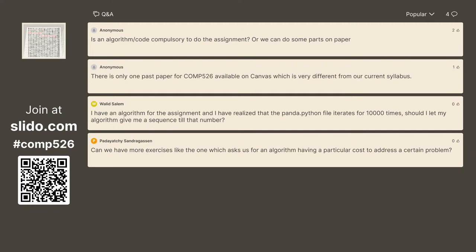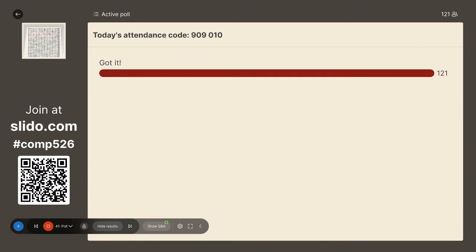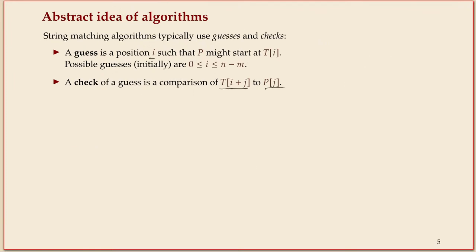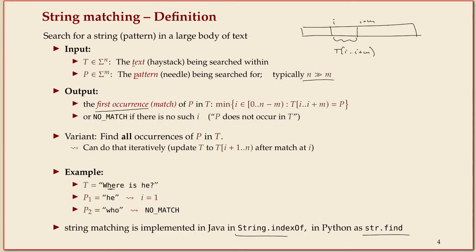Let's start. Here's the attendance code. Then we should talk about string matching again. Let me briefly recap — we started unit four last time with some formal notation for strings and string matching, and just because this pops up all the time, I want to repeat it so that we're on the same page.